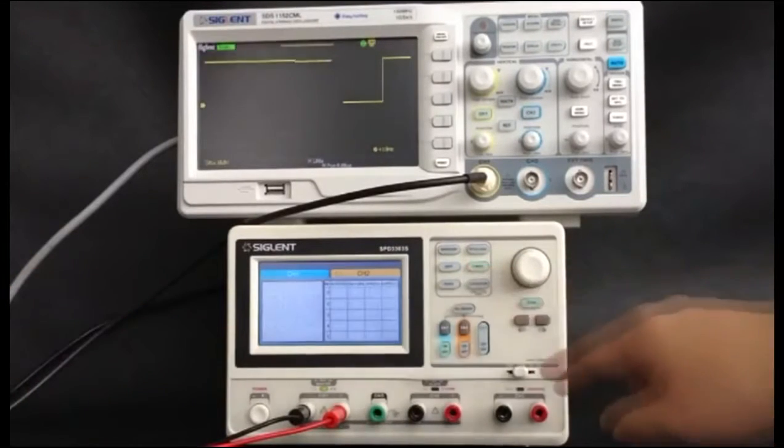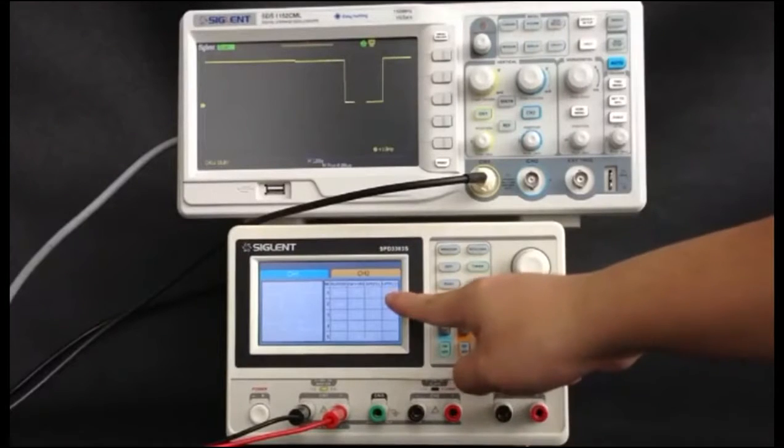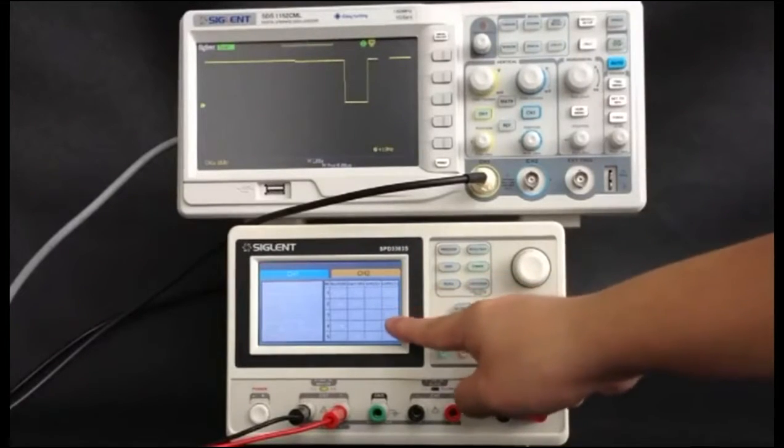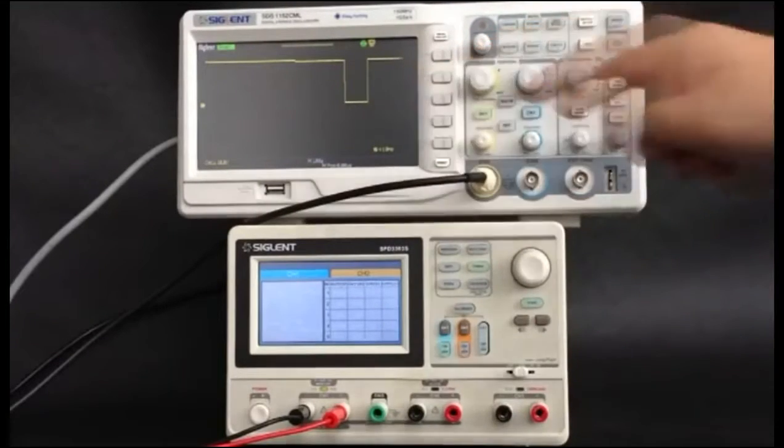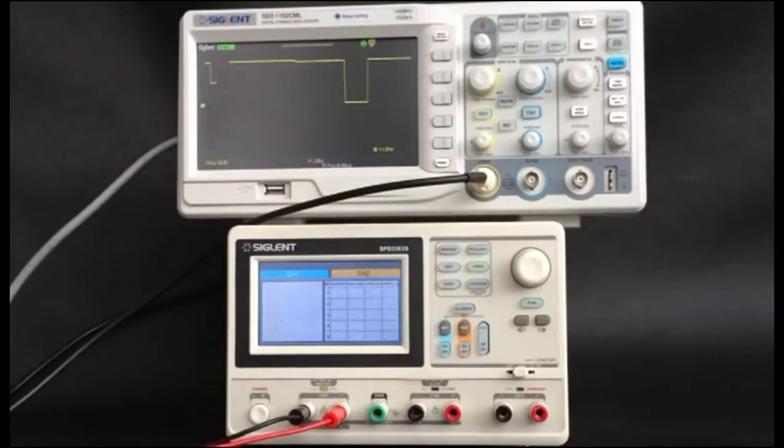The output changes according to the value set by the timer output. Then, send the signal to the oscilloscope. As you can observe, the oscilloscope displays the decreasing of the time and the changes of the waveform perfectly. See you next time.